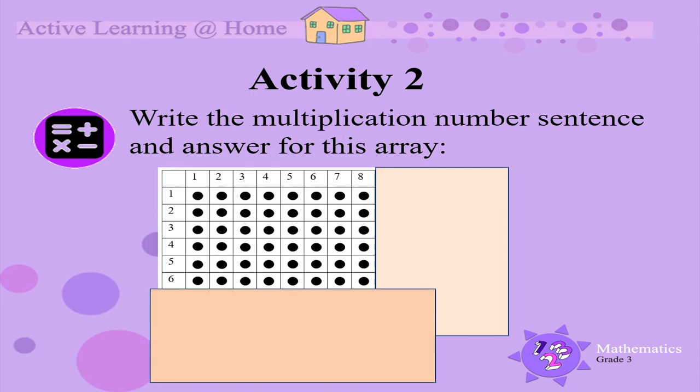You do this one now. Write the multiplication number sentence and answer for this array. There are 6 groups of 8, so the multiplication number sentence is 6 times 8. Now count the dots and you will get the answer, 48.